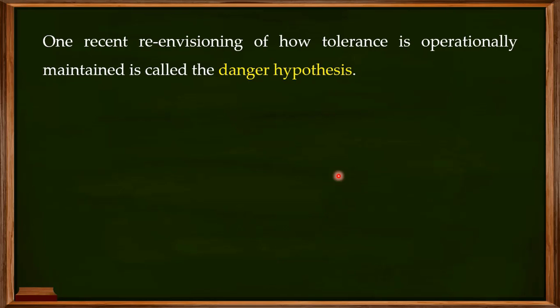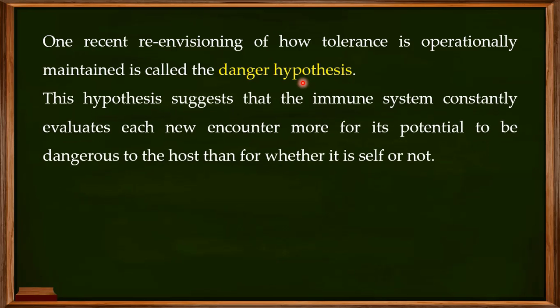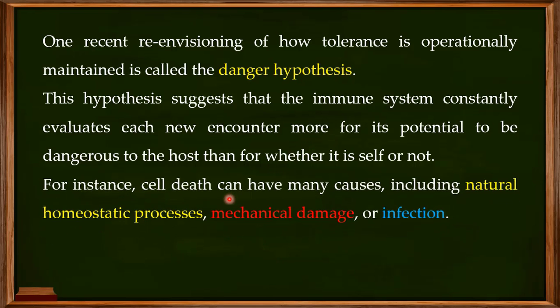One recent re-envisioning of how tolerance is operationally maintained is called the danger hypothesis. This hypothesis states that the immune system constantly evaluates each new encounter more for its potential to be dangerous to the host than for whether it is self or not. Cell death can have many causes — for example, there is a natural homeostatic process called apoptosis, which ensures that damaged cells are properly removed and reusable components are recycled.